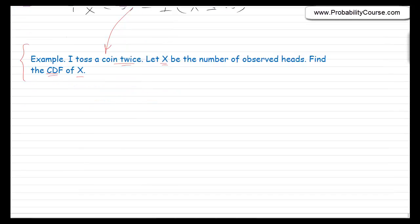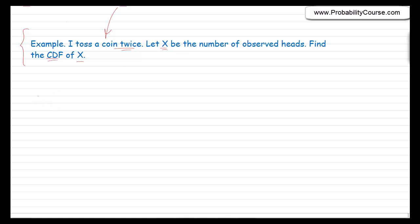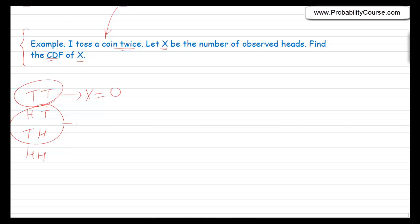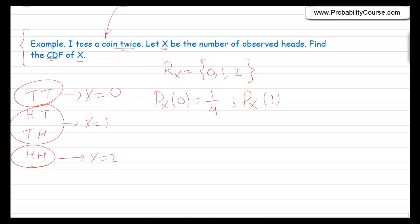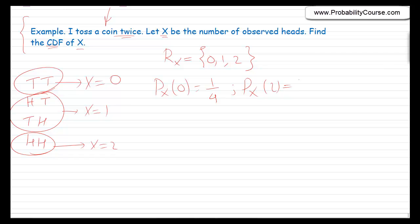Let's look at the solution. The possible outcomes of tossing a coin twice are: tails-tails, heads-tails, tails-heads, and heads-heads, each with probability one-fourth. If the outcome is tails-tails, x equals zero. If heads-tails or tails-heads, x equals one. If heads-heads, x equals two. So the random variable has range {0, 1, 2}. The probability that x equals zero is one-fourth. The probability that x equals one is one-fourth plus one-fourth, which is one-half. And the probability that x equals two is one-fourth.